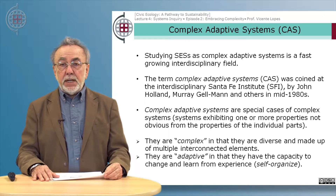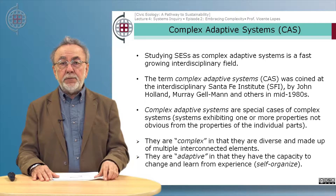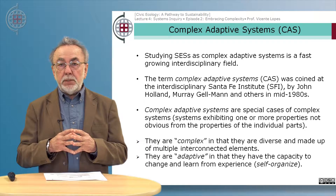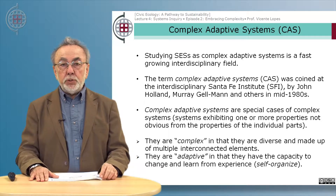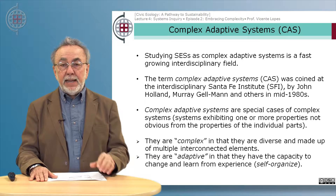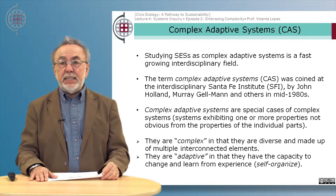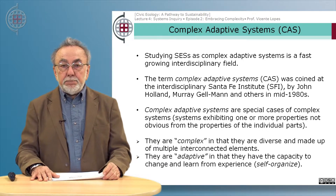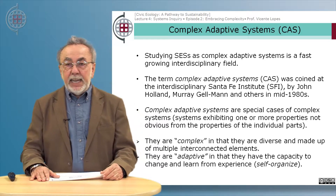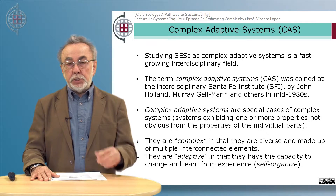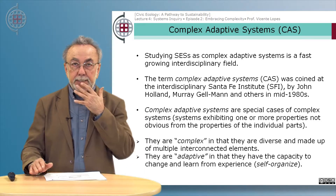Complex adaptive systems are special cases of complex systems — systems exhibiting one or more properties not obvious from the properties of the individual parts. They are complex in the sense that they are diverse and made of multiple interconnected elements. Most importantly, they are adaptive in the sense that they have the capacity to change and learn from experience, a term usually referred to as self-organization.